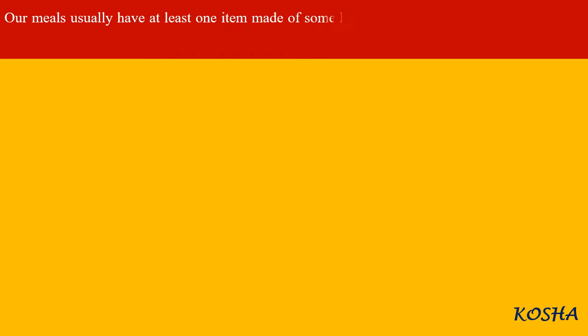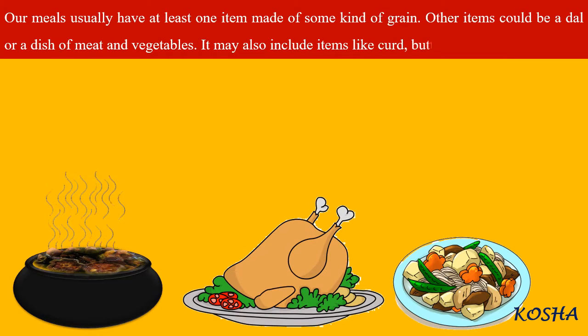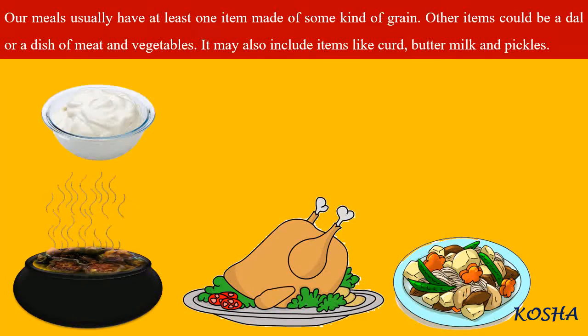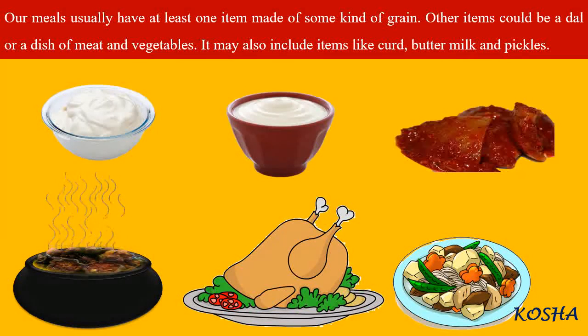Our meals usually have at least one item made of some kind of grain. Other items could be a dal or a dish of meat and vegetables. It may also include items like curd, buttermilk and pickles.